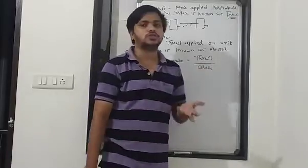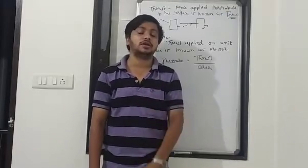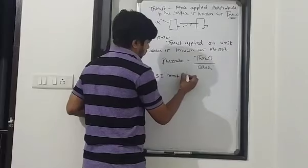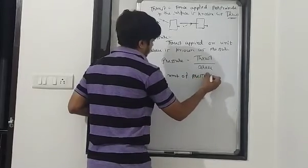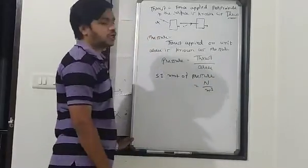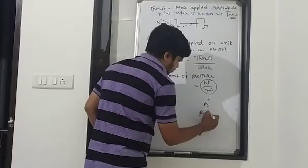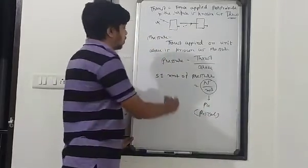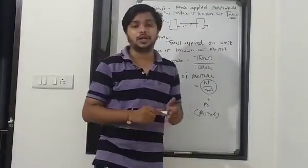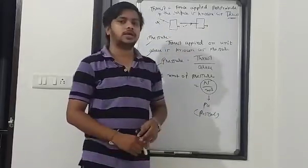Thrust is always directly proportional to pressure. If you apply more force, pressure will be more; if you apply less force, pressure will be less. The SI unit of pressure: thrust is a type of force so it is in newton, and area is in meter squared. So pressure is newton per meter squared, which is also known as Pascal.